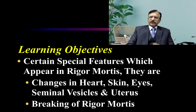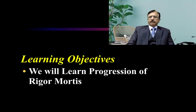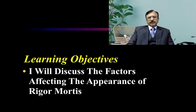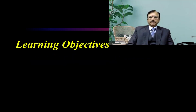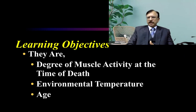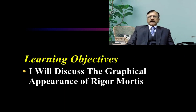We'll discuss the breaking of rigor — how it breaks and what happens when it breaks. Then we'll learn the progression of rigor mortis, because it helps in determining post-mortem interval, which is one of the objectives of autopsy. We'll discuss various factors which affect the appearance of rigor mortis — hastening or slowing it down — dependent upon glycogen content in the muscles, degree of muscle activity at the time of death, environmental temperature, age of the individual, and glycogen reserves. Then I'll discuss the graphic representation of rigor mortis development.